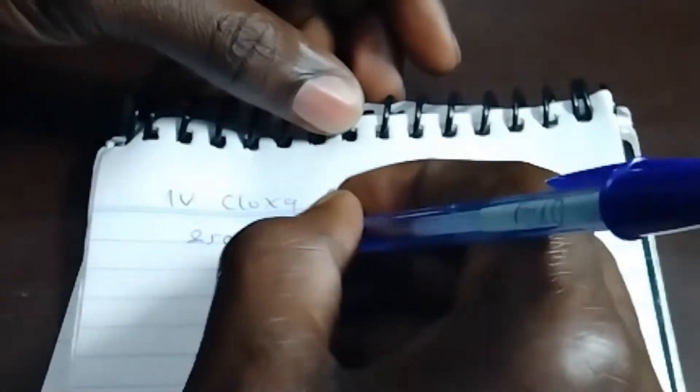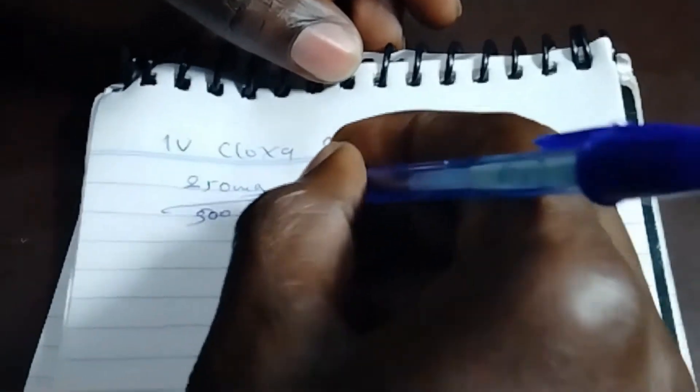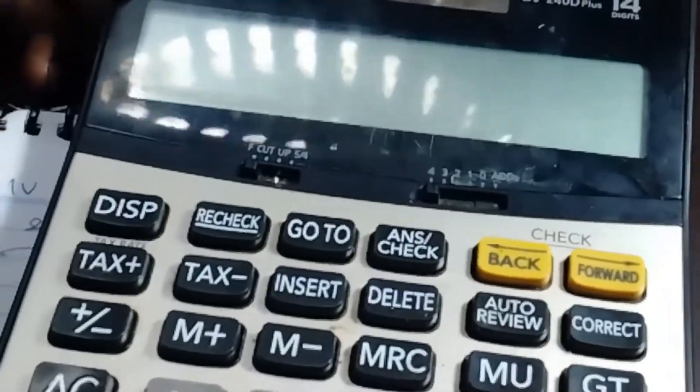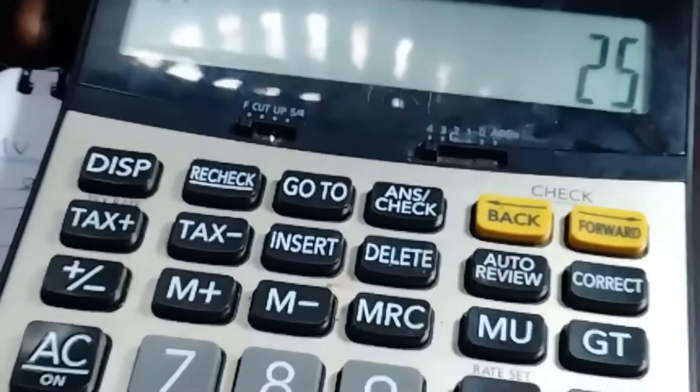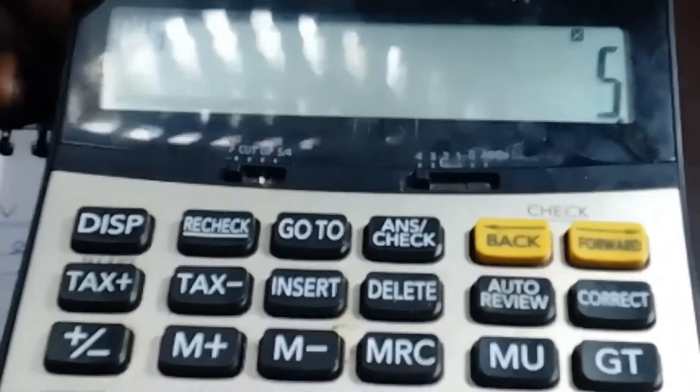250 milligram divided by 500 times 5. 250 divided by 500 times 5, you are going to get 2.5 mils.